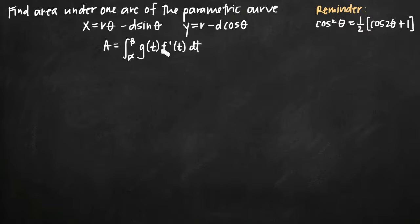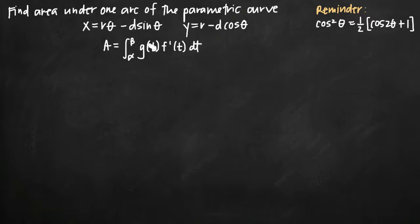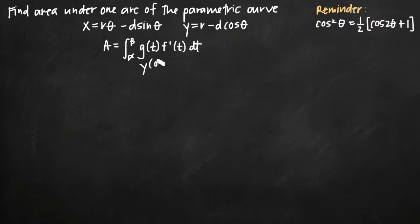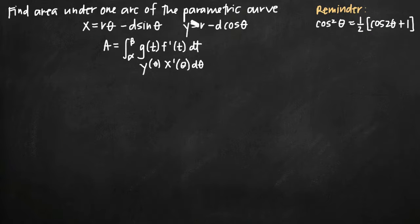The first thing we need to realize is that our formula is defined in terms of t — we have g of t, f prime of t, and dt. Our parametric curve is defined for x and y in terms of theta. So we want to convert our formula into a more recognizable form: instead of g of t we have y of theta, instead of f prime of t we have x prime of theta, and dt becomes d theta.